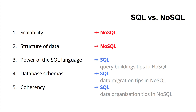Let us recap the five points. On scalability, NoSQL wins — I think we all agree on that. On the way you can structure your data, multi-valued fields is a big win for NoSQL. On the other hand, SQL is a great language and if you have a DBA enforcing strong schemas, that is something you will miss in the NoSQL world. And the way you run transactions in NoSQL involves slightly more work than in the SQL world. We will be seeing you again in the next episode, which will have tips and tricks to help you overcome some of those NoSQL limitations.